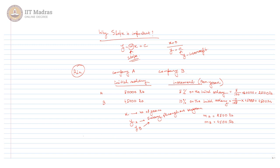For x equal to 0 — that is, in the initial year — the salary from company A will be 50,000. Using the equation YA = MA·x + CA, putting x = 0, we get CA = 50,000. This is for company A. Similarly, for company B, at x = 0, we get CB = 45,000.